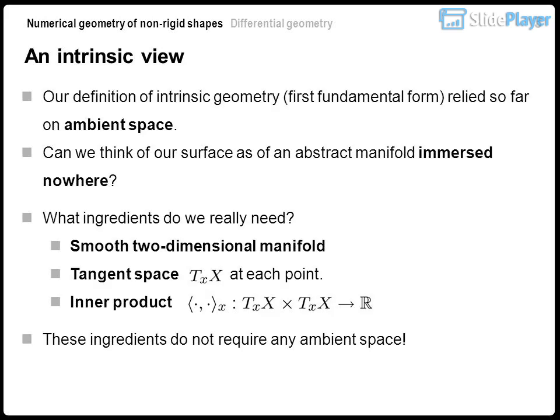An intrinsic view: our definition of intrinsic geometry via the first fundamental form has so far relied on ambient space. Can we think of our surface as an abstract manifold immersed nowhere? The ingredients we really need are: a smooth two-dimensional manifold, a tangent space at each point, and an inner product — none of which require any ambient space.